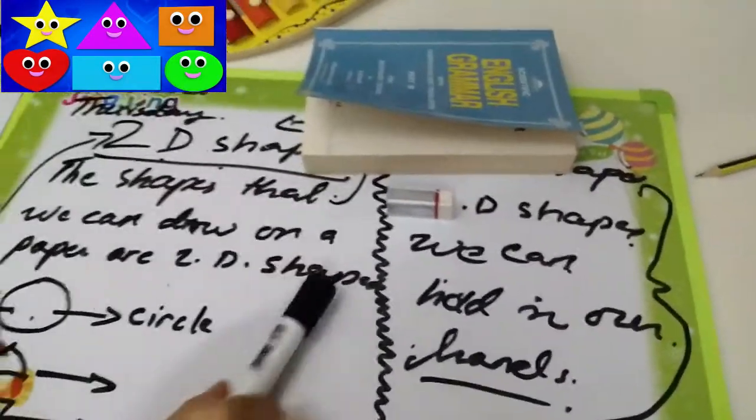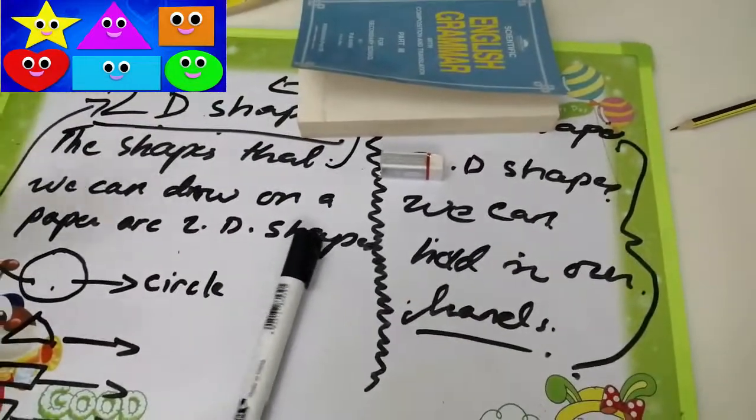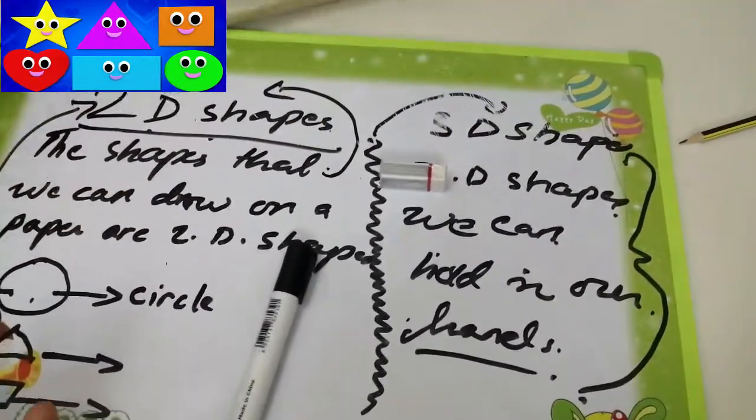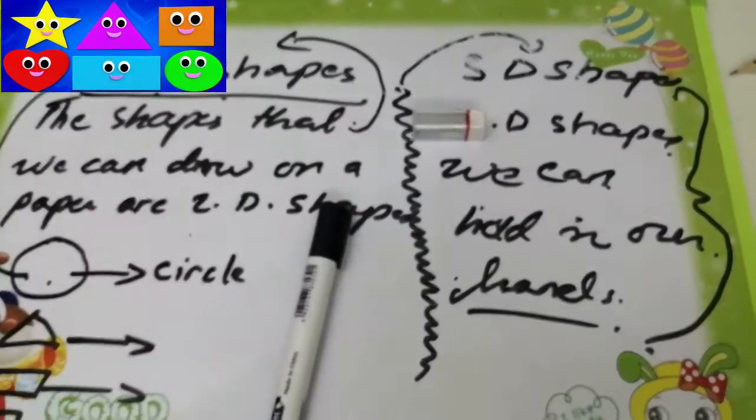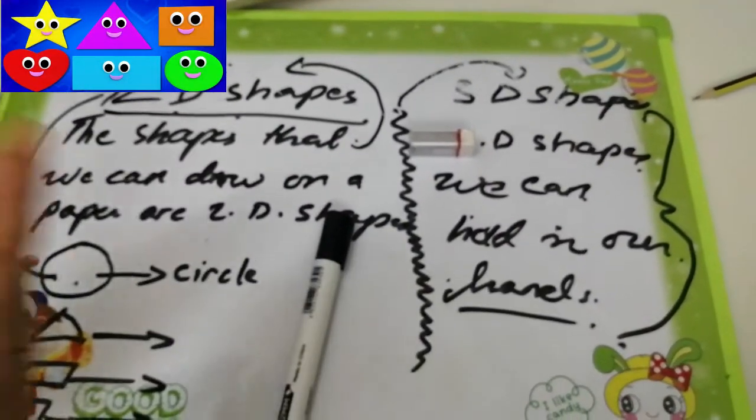So students, before I wind up, quickly come with me. Before I wind up the lesson of today, we will see the examples of 2D shapes and 3D shapes.